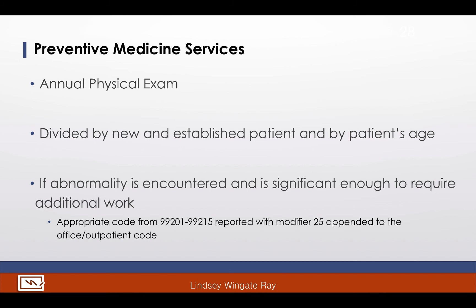The next category is preventative medicine services. It is used when the patient is not ill but is coming in for an annual physical exam. The codes are divided between new and established patients and are selected based on the patient's age. If the patient presents for preventative medicine services and an abnormality is encountered or a pre-existing problem is addressed that is significant enough to require additional work performing the key components of a problem E&M code, the appropriate office visit code should be reported in addition to the preventative medicine services. A modifier 25 must be appended to the office or outpatient services code.